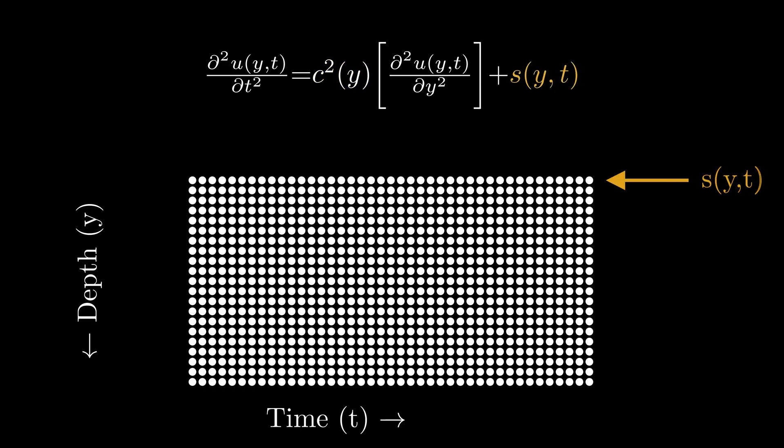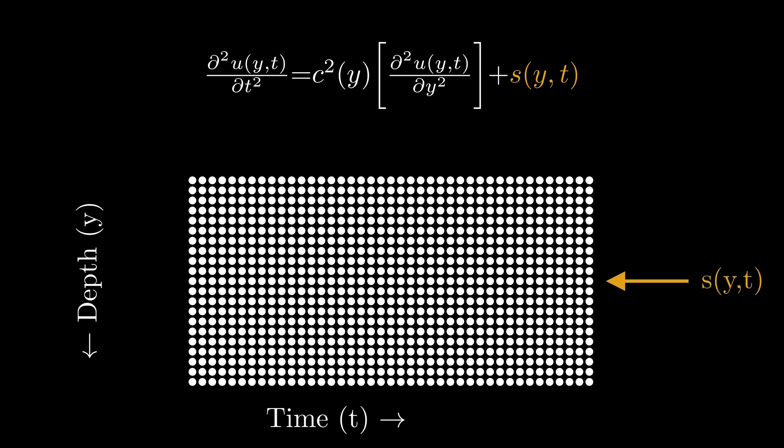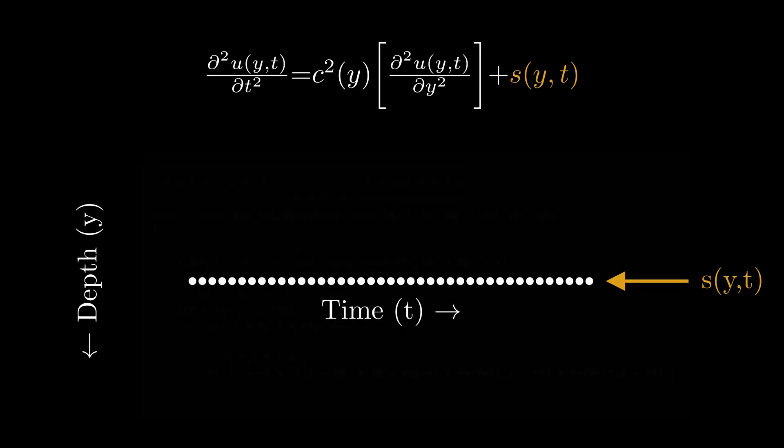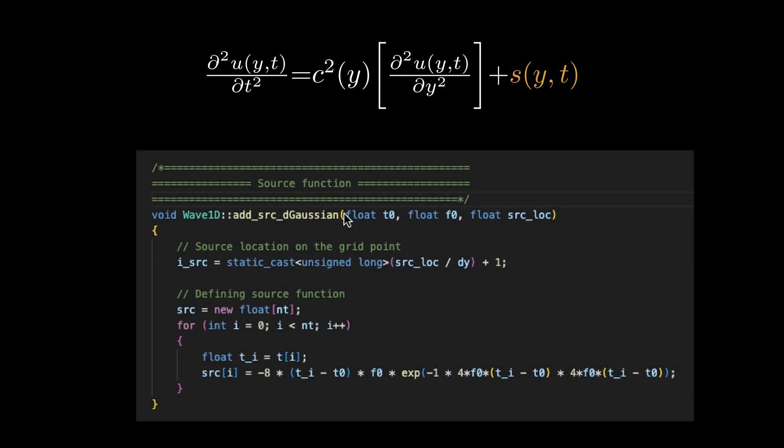I've earlier defined the source as a function of time and this source can be placed on any of the defined grid points along the depth. In code, I implemented the source function such that it accepts T0, F0 and the source location as inputs. First thing is to identify the grid point corresponding to the location and keep track of it. Then, it was just about defining the function that I've already discussed before.